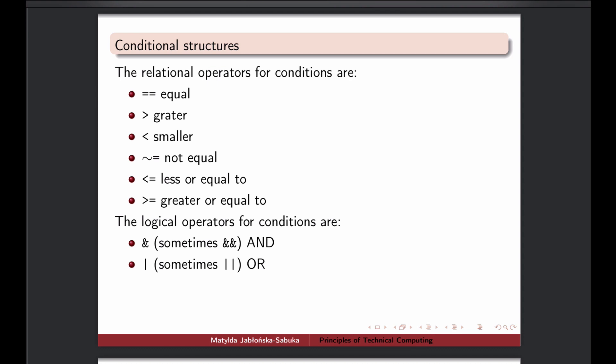In MATLAB, the list is here. We have a comparison whether something is equal, and we use the double equality sign. Remember it's the double one when you want to check something, because single equality means assigning a value to a variable. This is one of the most common mistakes in the beginning.